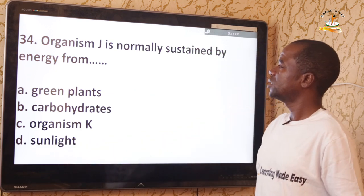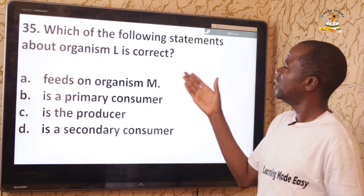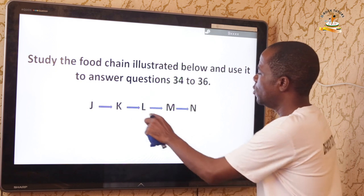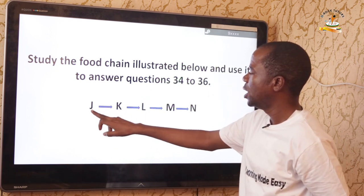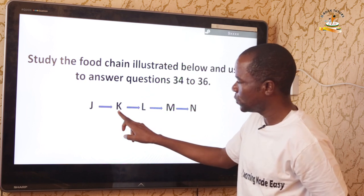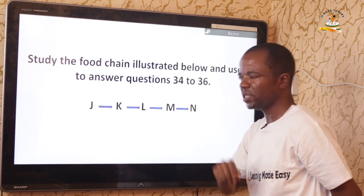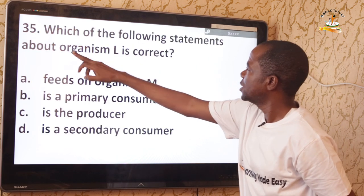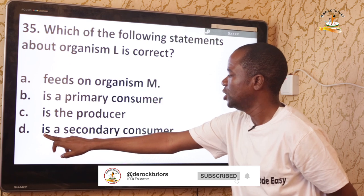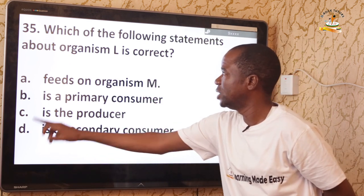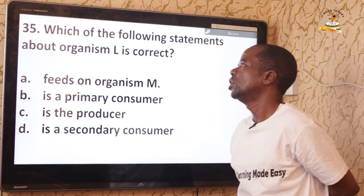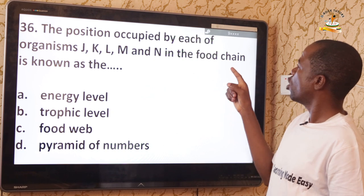Question 35: Which statement about organism L is correct? J is the producer, K feeds directly on the producer making it the primary consumer, and L feeds on the primary consumer making it a secondary consumer. The correct answer is D — L is a secondary consumer.